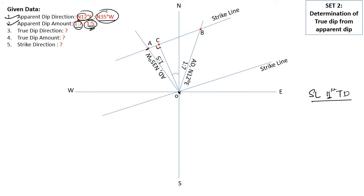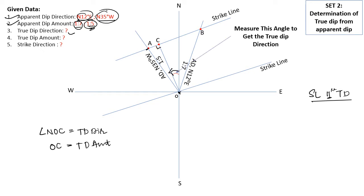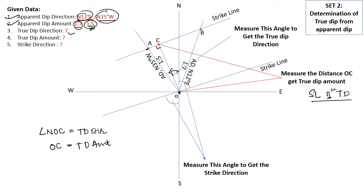I will name the foot of the perpendicular as point C. Measuring angle NOC will give me the true dip direction, and measuring the distance OC will give me the true dip amount. Measuring these angles — one with respect to south and one with respect to north — will also give you the strike direction.